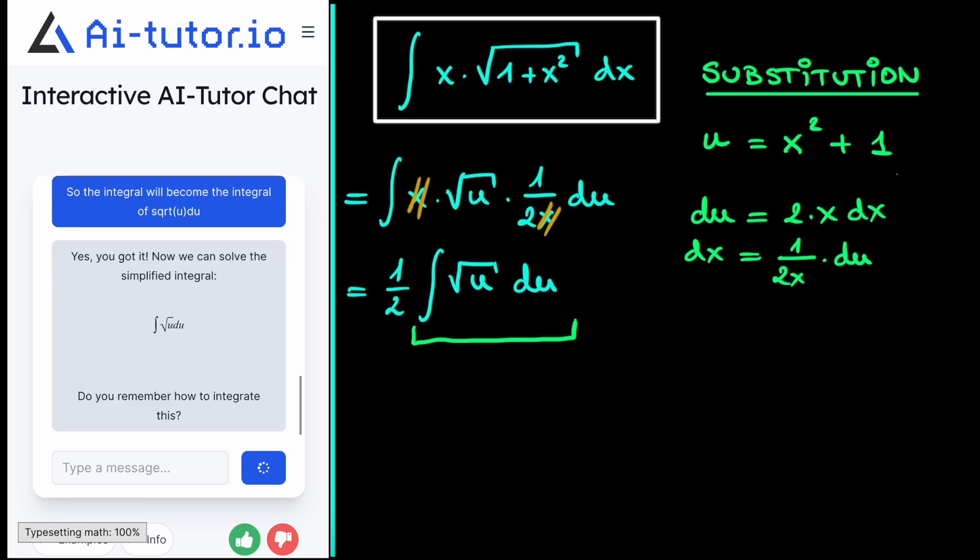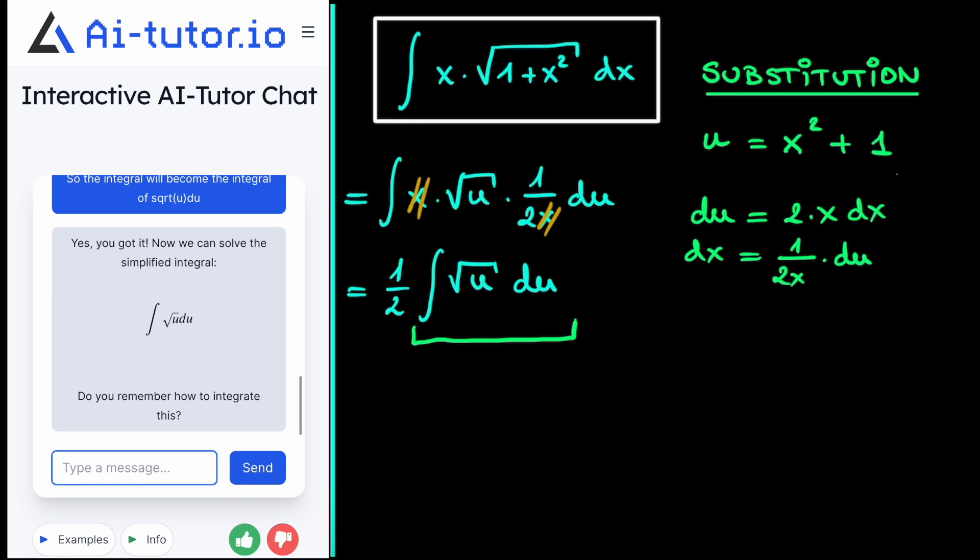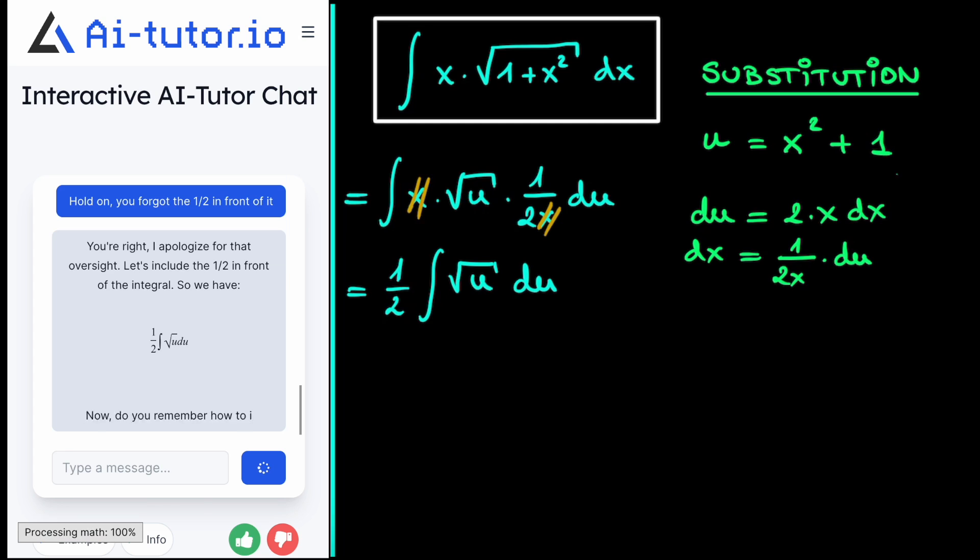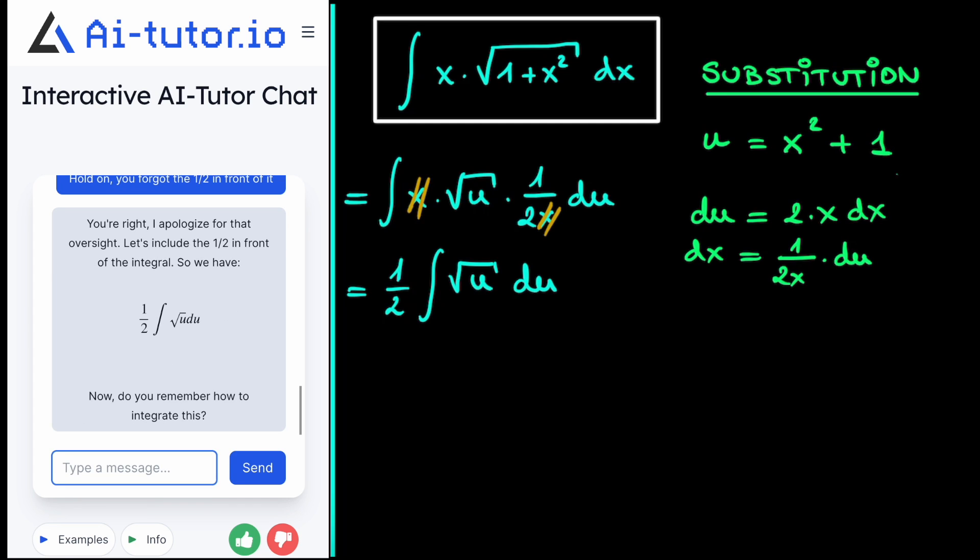And now we need to integrate this integral. However, if we forgot to mention this 1 half in front of the integral, and we want the AI tutor not to forget about it, then we can just say, well, hold on, you forgot the 1 half in front of it. And it will say, well, you're right, I apologize. And it will then put it back in front of the integral. And then it will ask us to integrate this remaining integral right here.